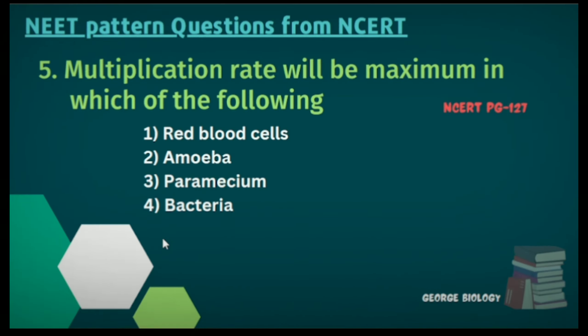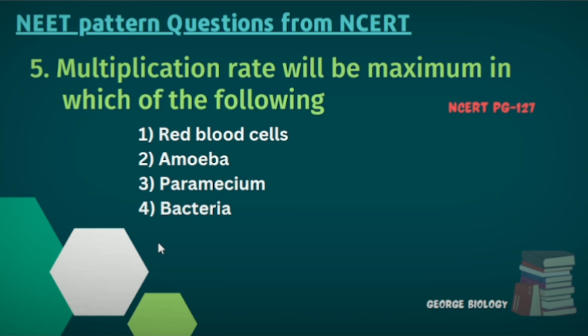Number five: Multiplication rate will be maximum in which of the following? Options: RBC (red blood cells), amoeba, paramecium, bacteria. The answer is bacteria.